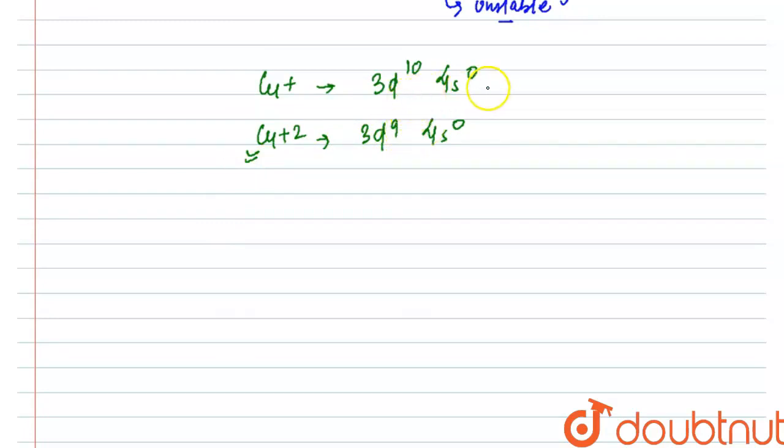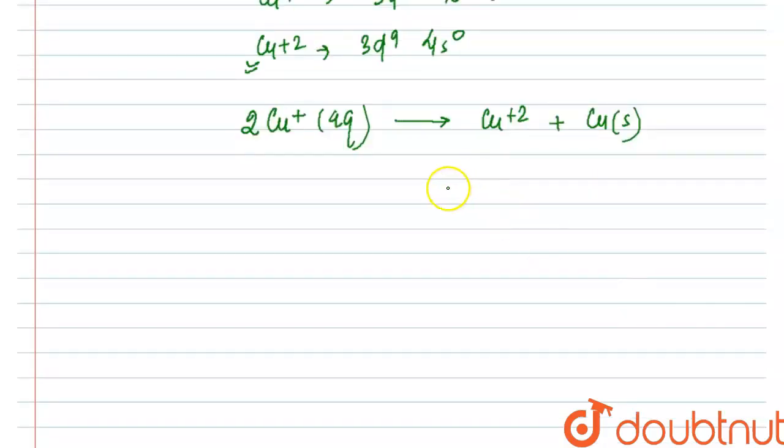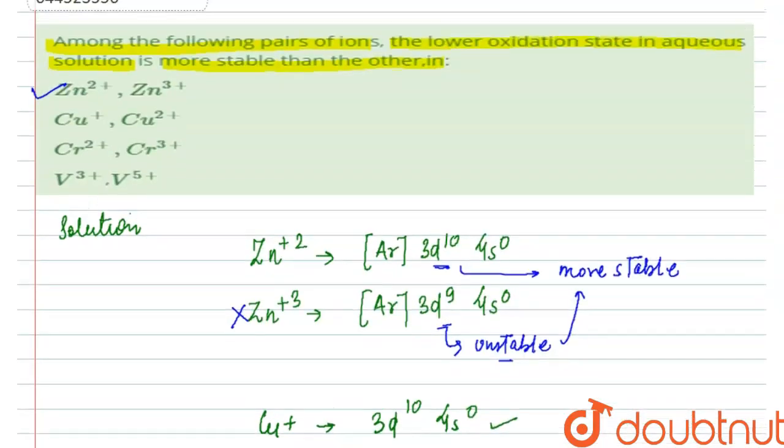Just by looking at the electronic configuration it looks like Cu+ is more stable, but actually what happens is that in aqueous solution, Cu+ undergoes disproportionation to form Cu+2 ion and Cu solid. And this happens because the hydration energy or enthalpy of Cu+2 is very high, which compensates the second ionization enthalpy of Cu to form Cu+2. This is the main reason why Cu generally gets converted into Cu+2 in aqueous solution, and this is more stable. So this one will not be the correct option.